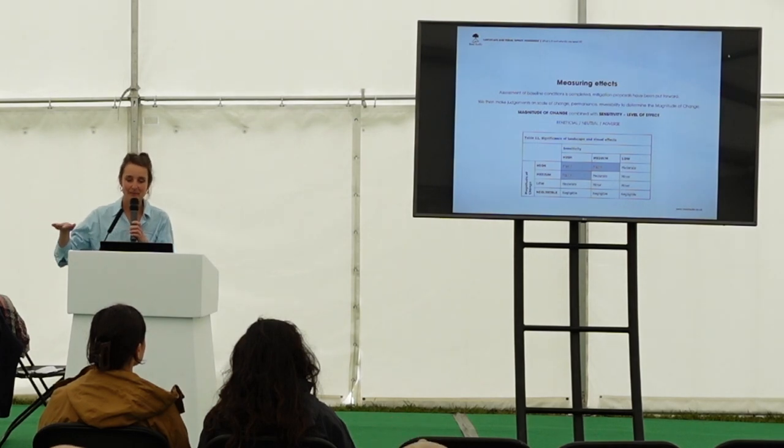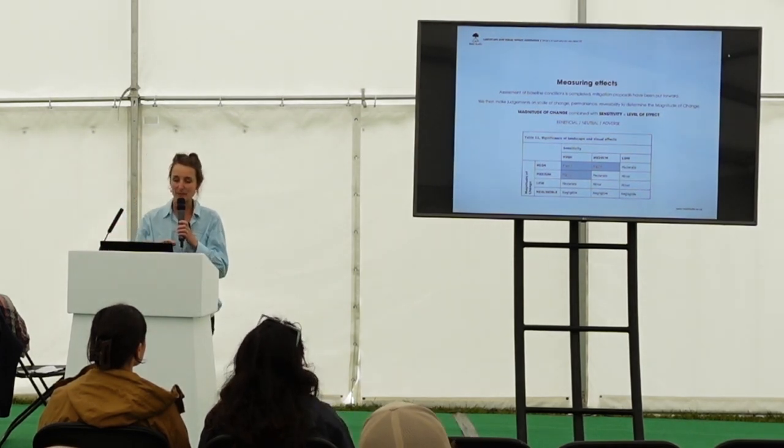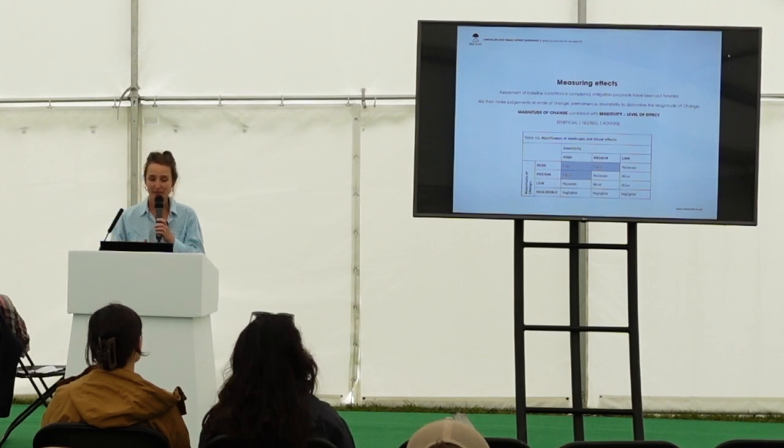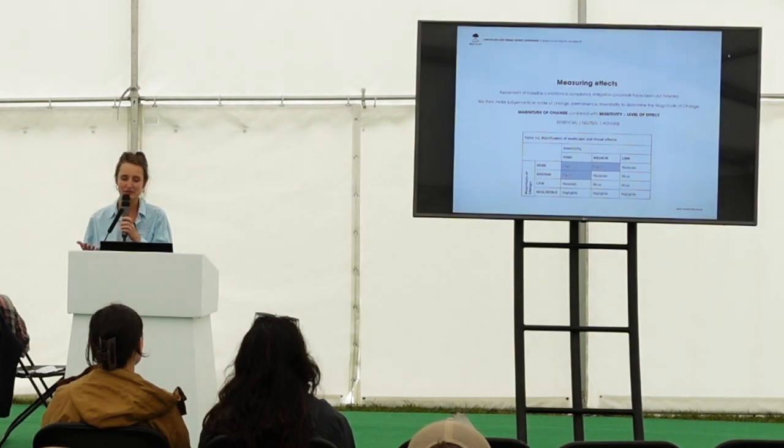After baseline landscape, baseline visual, and mitigation, we make judgments on the magnitude of change — is it a small, medium, or high change? We combine the sensitivity with the magnitude of change to get the results: a major, moderate, or minor level of effect. Those levels can be either beneficial, neutral, or adverse. If we start with simple land that has little biodiversity and add lots of enhancements as part of our strategy alongside the pods, we can say it's actually a beneficial change — which always helps.